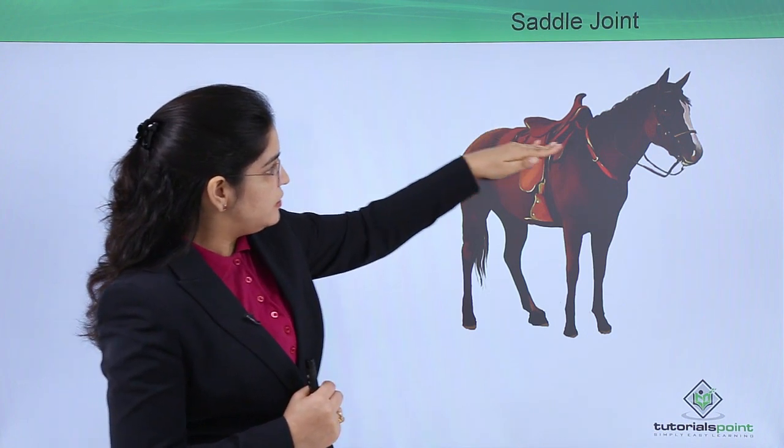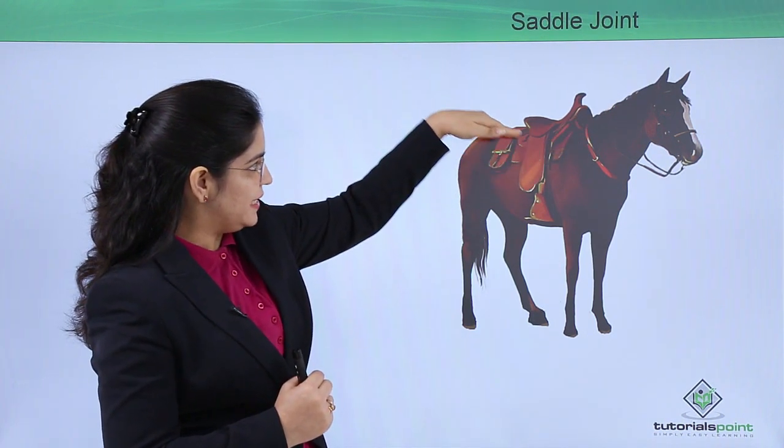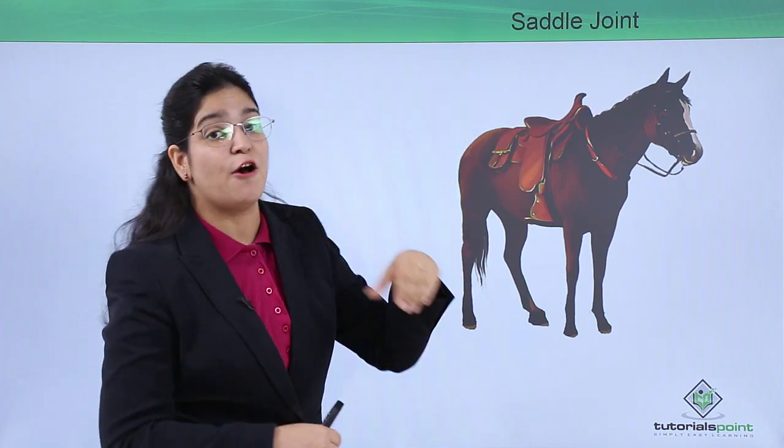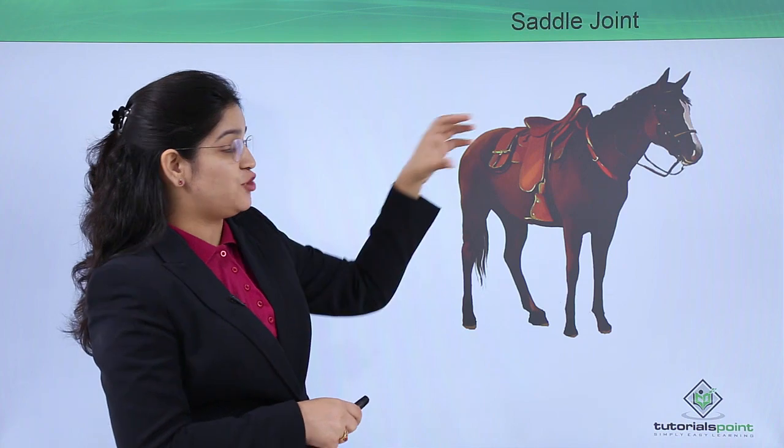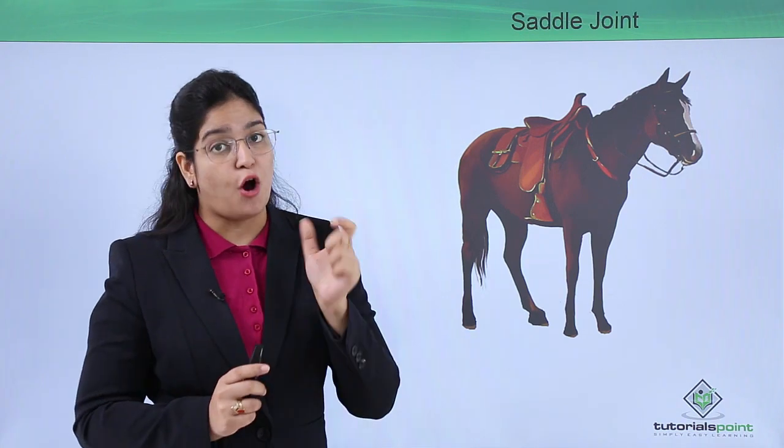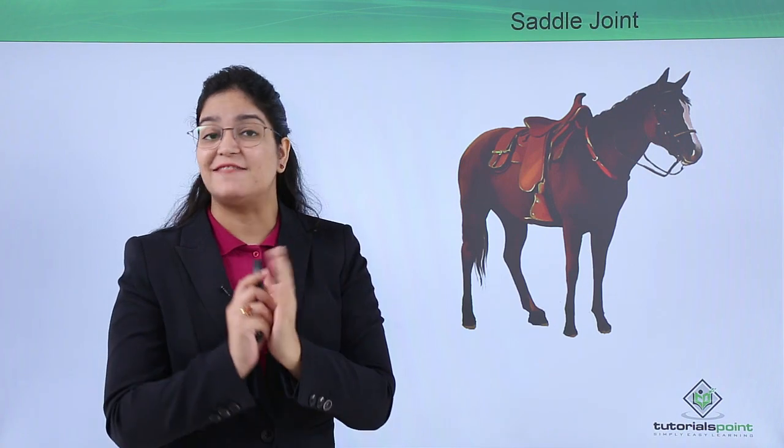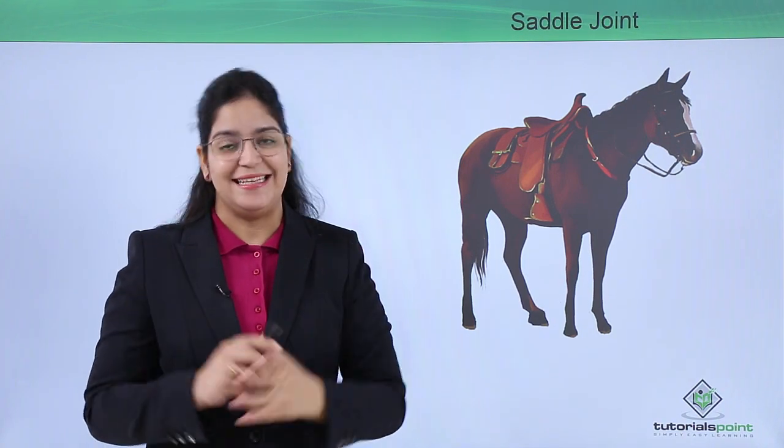If you will see, the back of the horse is in this shape, and on this a seat is fixed. Actually, our saddle joint almost looks like this saddle seat. That is why it is called the saddle joint.